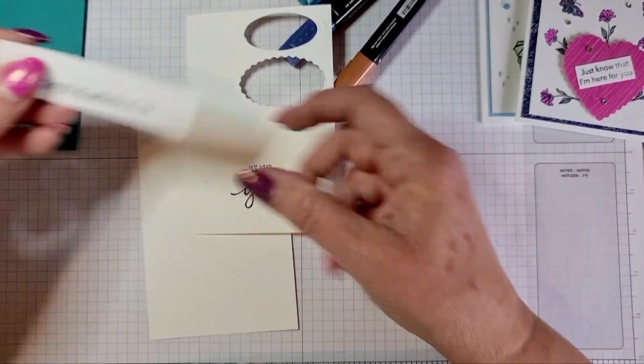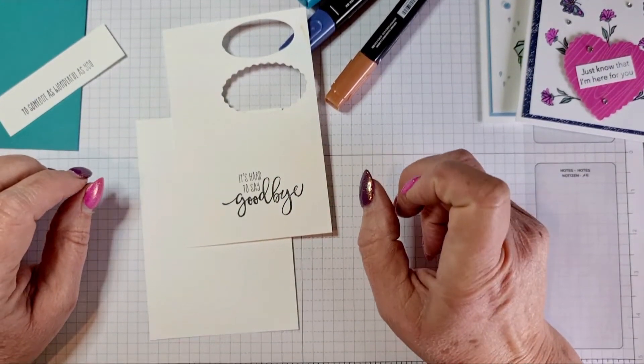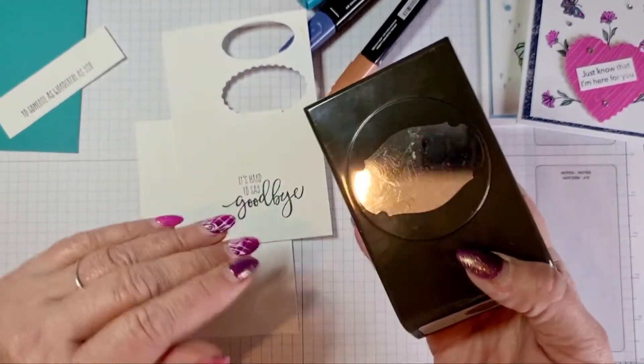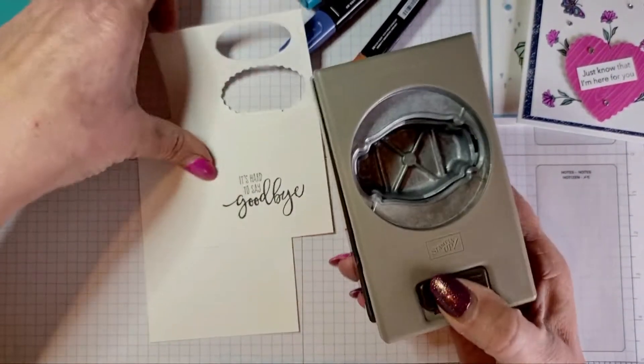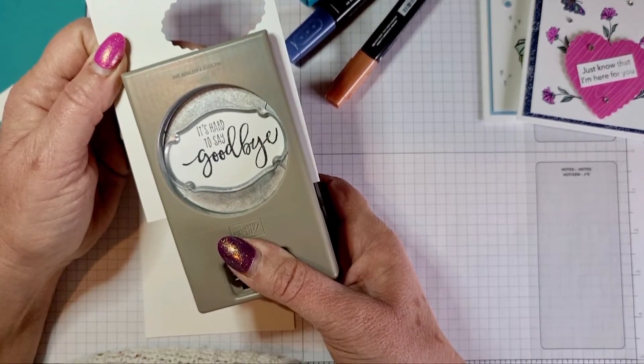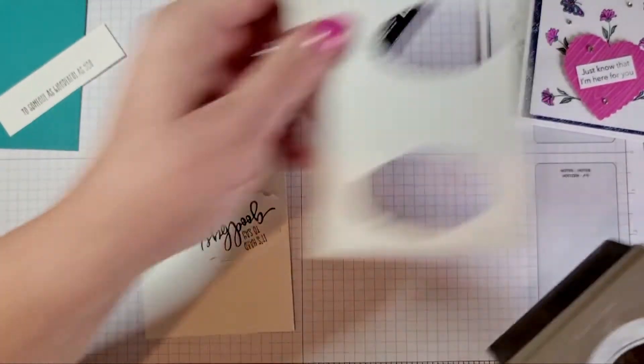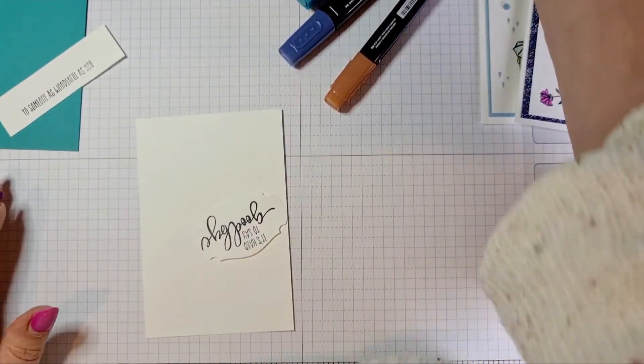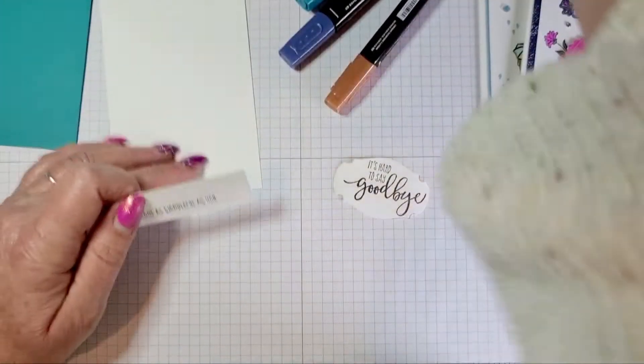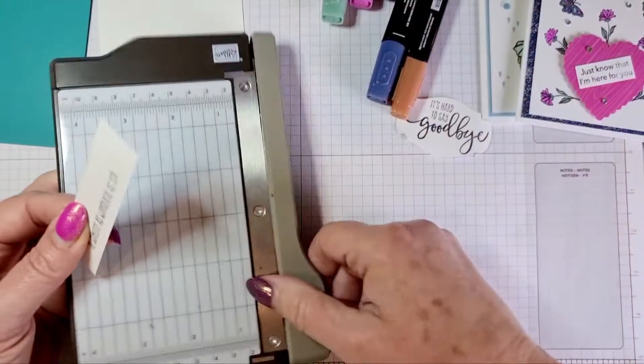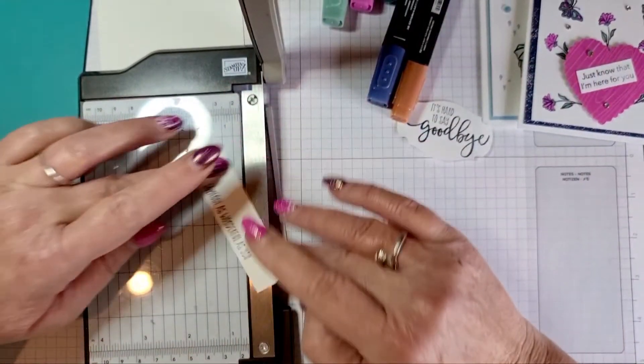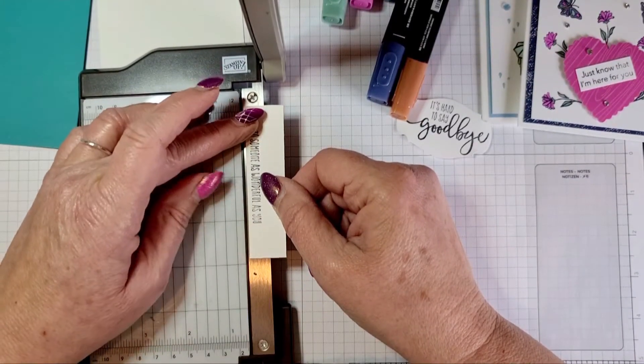I've got it's hard to say goodbye and to somebody as wonderful as you. I'll just chop them out. I can't remember which punch this is at the minute, it will be on my blog. I stamped that in Memento ink. I'm not that good with scissors, so I'm just going to line it up in my trimmer.